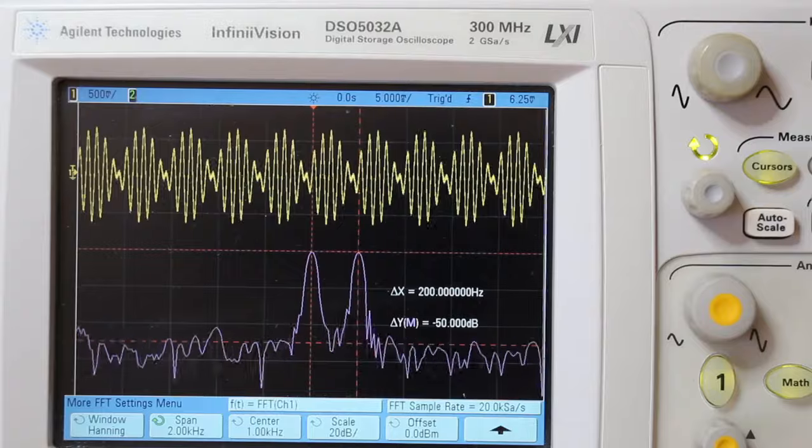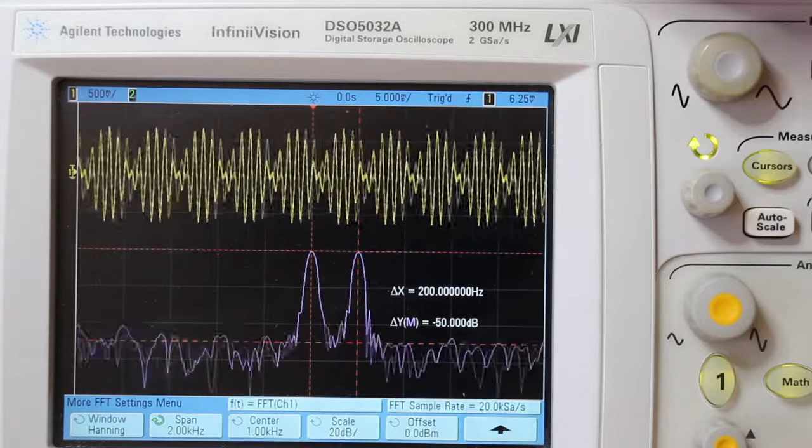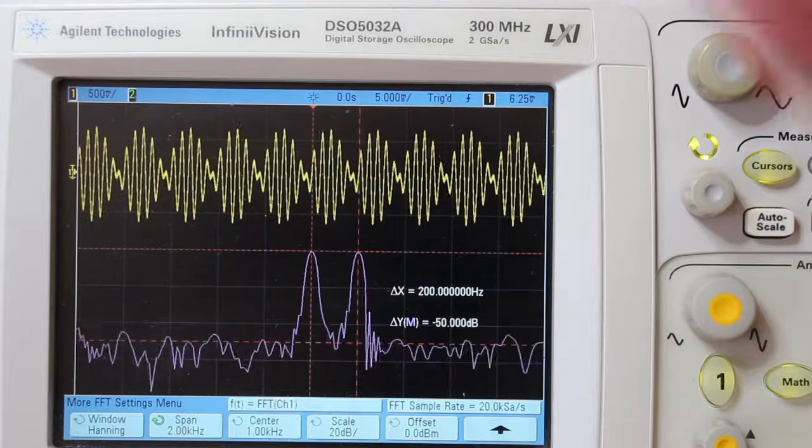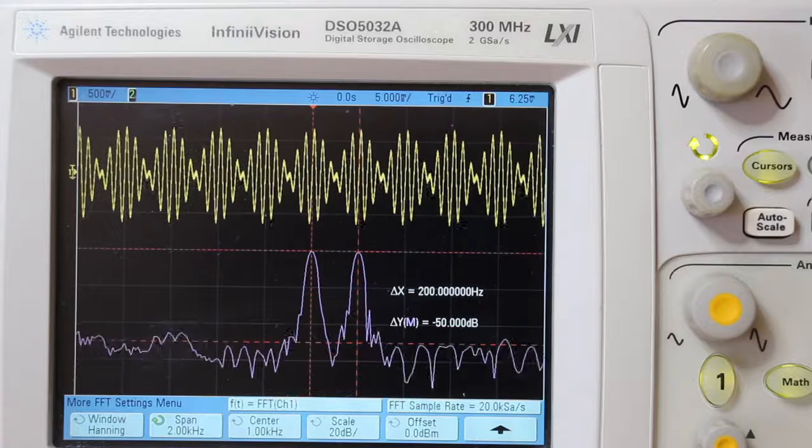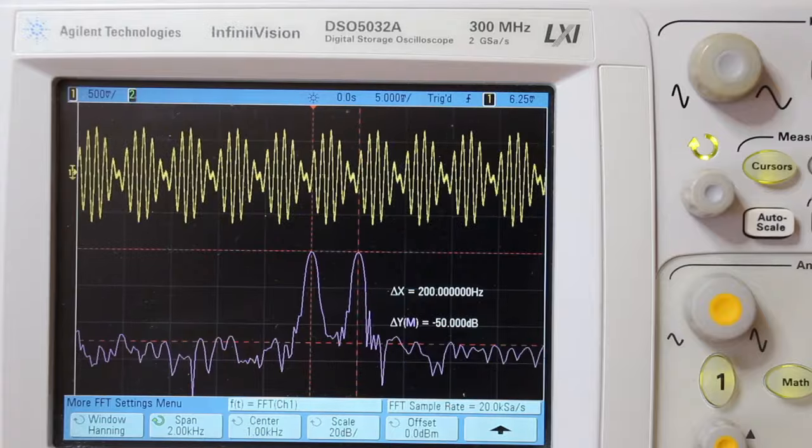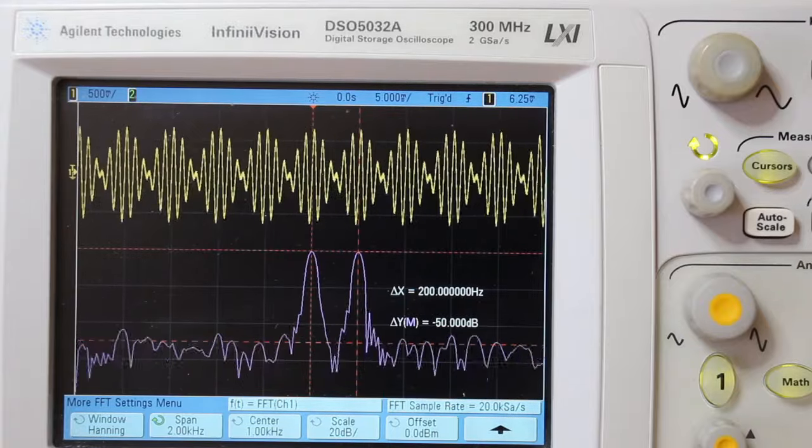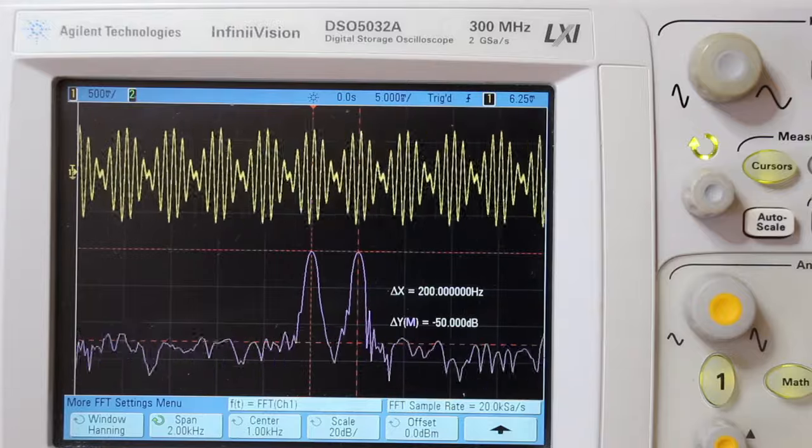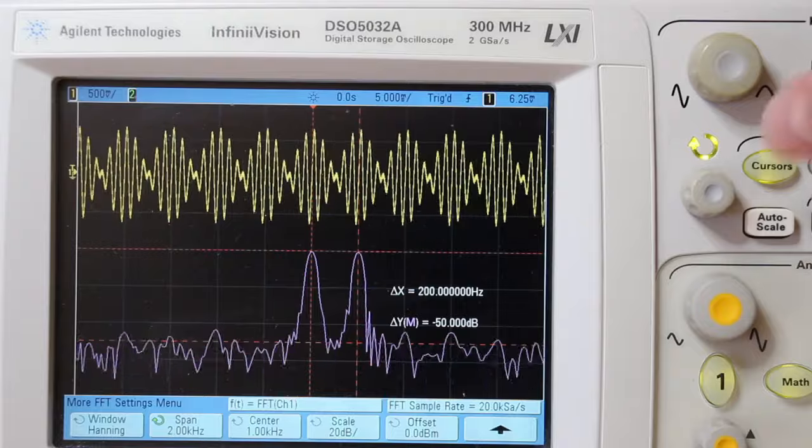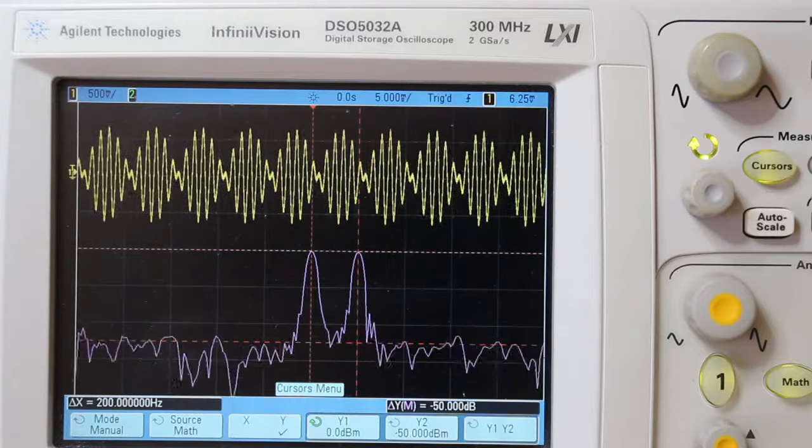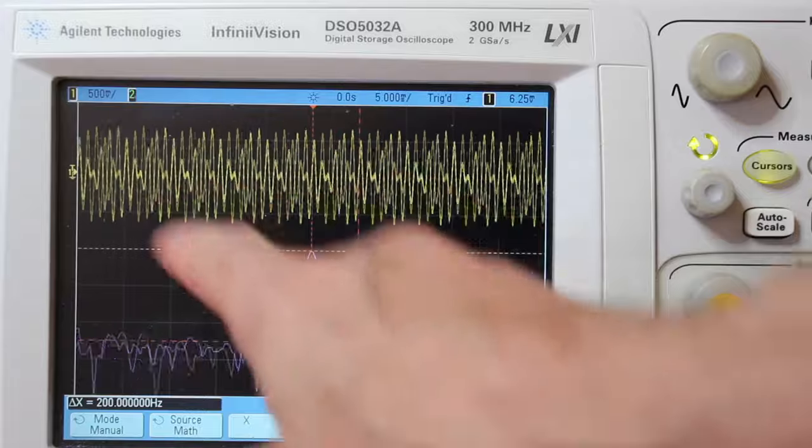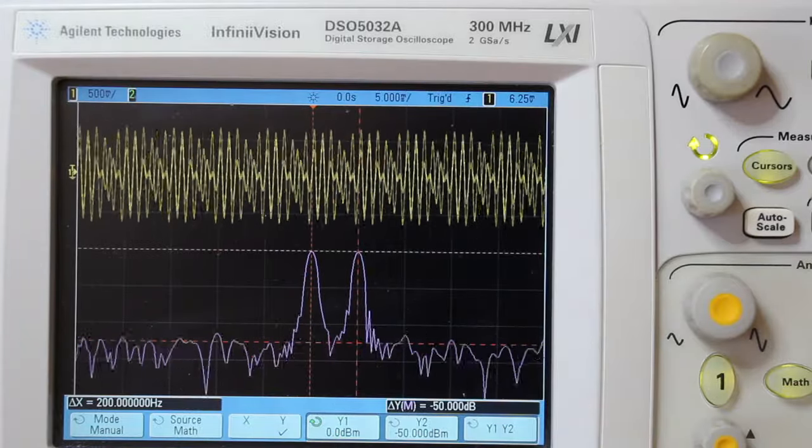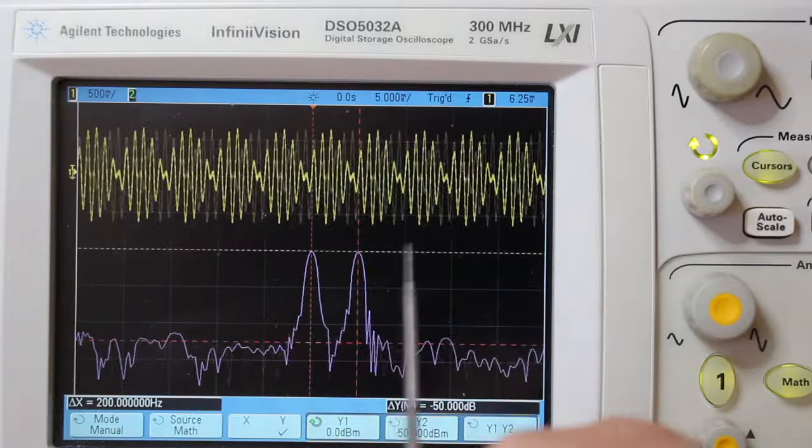Now I am using another oscilloscope. In this case it's the DSO5032-8 from Agilent. The maximum frequency is 300 MHz. It's an old instrument but very capable. Again the FFT display was set to a span of 2 kHz and center frequency of 1 kHz. With this instrument we can measure both levels in dBm and frequency. Here we can see Y1 is 0 dBm and X1 is 1 kHz and X2 is 1.2 kHz.